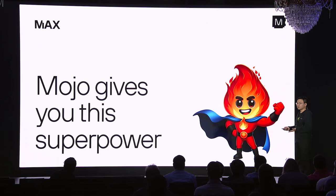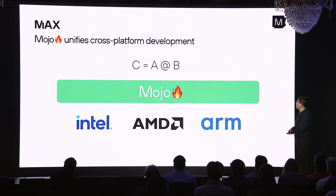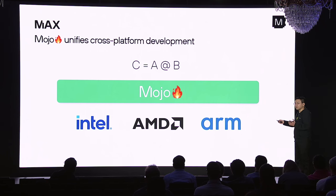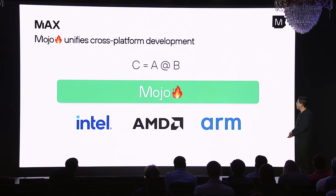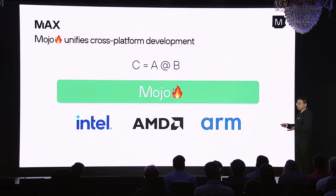This is where we need Mojo — this is where Mojo gives us its superpower. In Max, all the kernels for all the architectures are written in Mojo. For matrix multiplication, you can adapt the same algorithm to a new architecture with very minor code changes, significantly reducing development effort. And Mojo unifies the API across different platforms — same API, same fusion support — making it much easier to integrate into a framework.